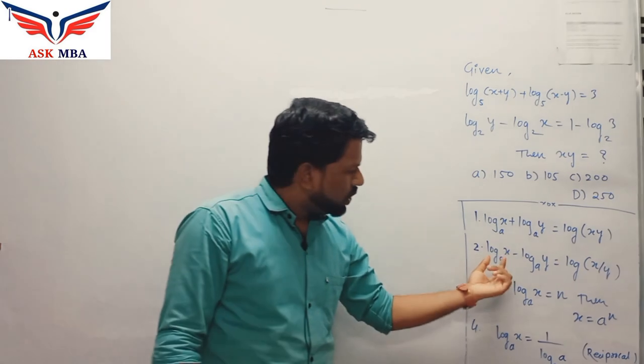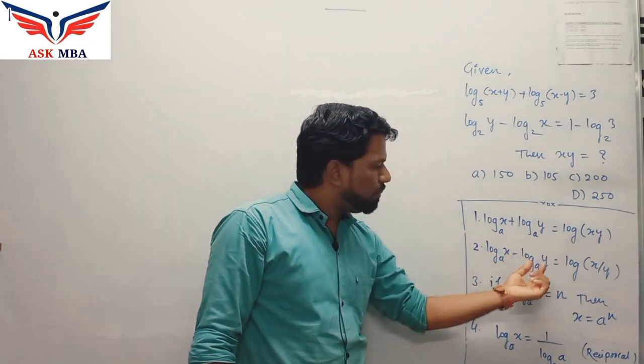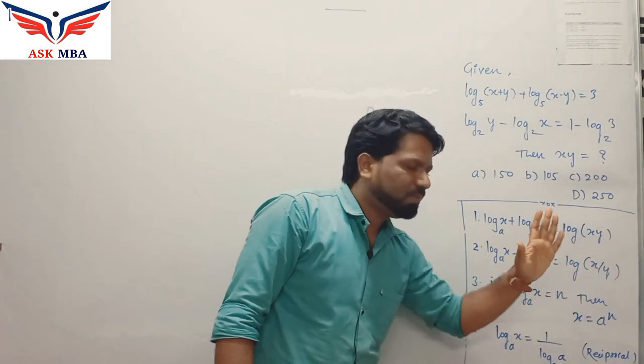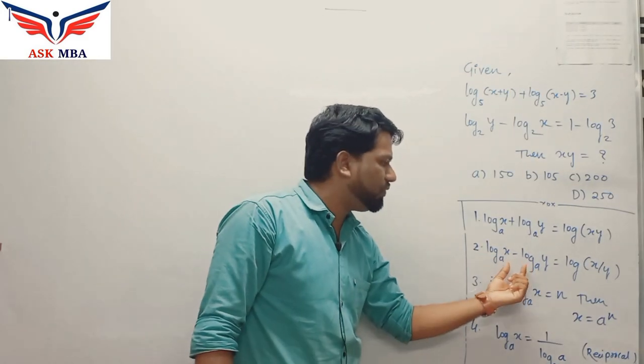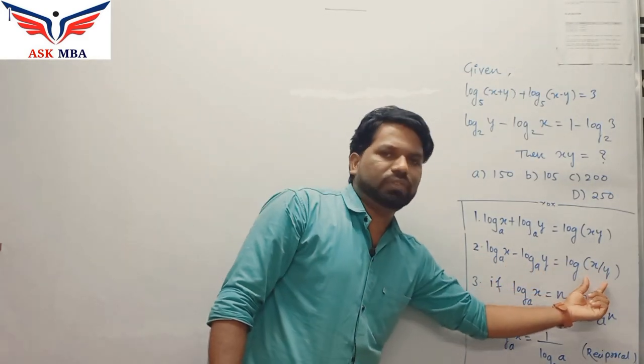Second: log x base a minus log y base a equal to log of x by y. So same as the first one is wherever you see the difference of two terms, you will get the division.